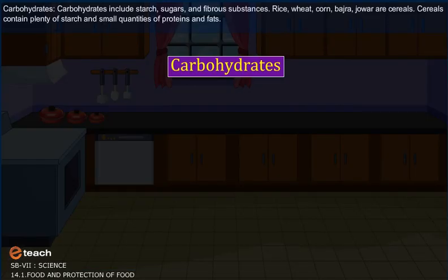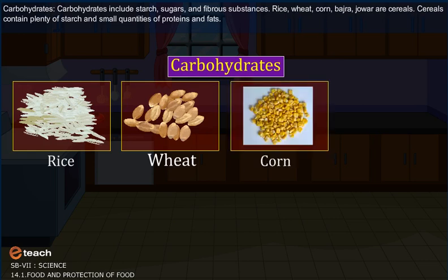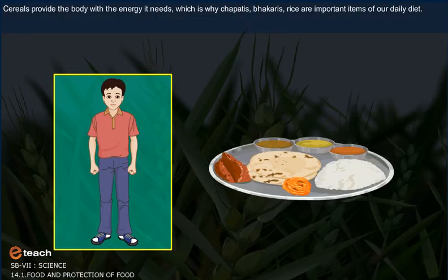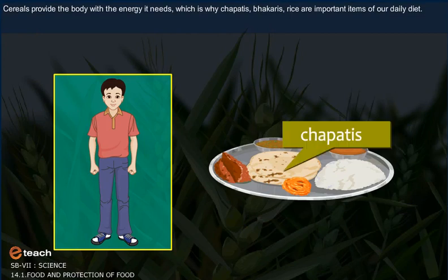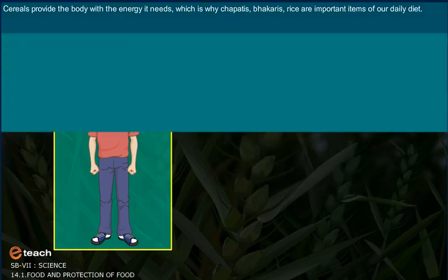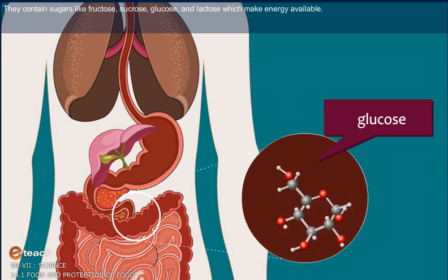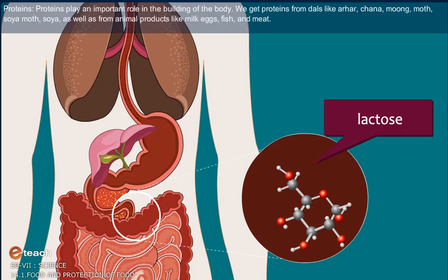Carbohydrates include starch, sugars, and fibrous substances. Rice, wheat, corn, bajra, and jowar are cereals. Cereals contain plenty of starch and small quantities of proteins and fats. Cereals provide the body with the energy it needs, which is why chapatis, bhakris, and rice are important items of our daily diet. They contain sugars like fructose, sucrose, glucose, and lactose, which make energy available. All carbohydrates are reduced to glucose during digestion, and glucose is supplied through the blood to all parts of the body.